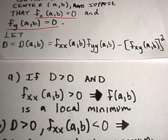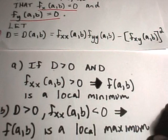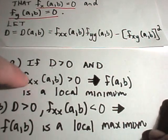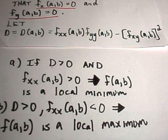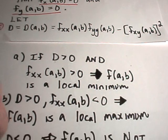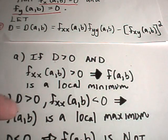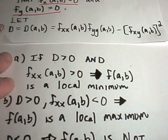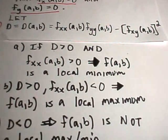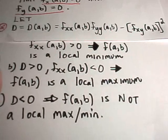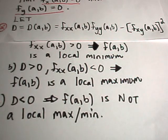If this D value is greater than zero and the second partial with respect to x is also greater than zero, we've got a minimum. If the second partial is less than zero but D is greater than zero, we've got a local maximum. And the last condition says that if D is simply less than zero, that point is neither a local maximum nor a minimum — it's what we call a saddle point.